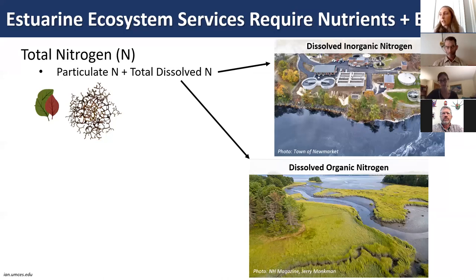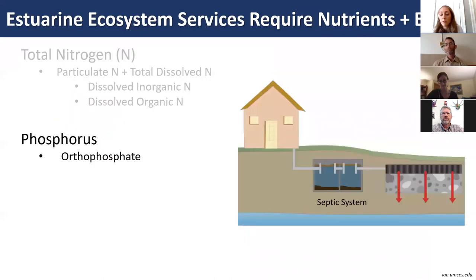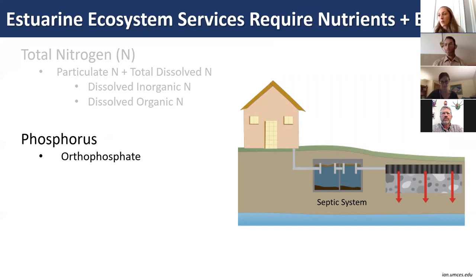Besides nitrogen, another important nutrient is phosphorus—specifically the inorganic form orthophosphate—which often originates from anthropogenic sources including septic systems.